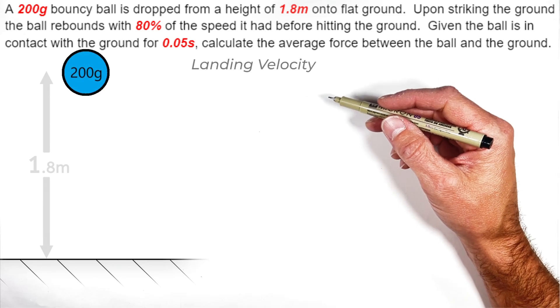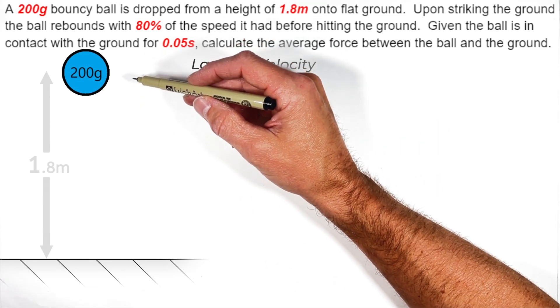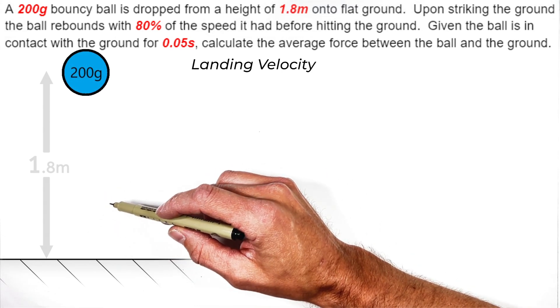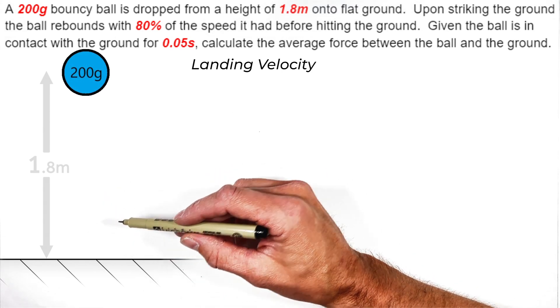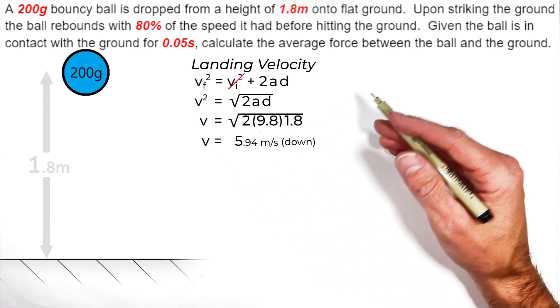So starting with the velocity of the ball when it strikes the ground, this ball is just in free fall from a height of 1.8 meters. We're trying to solve for how fast it's going to be going when it hits the ground. Now, whether you choose to solve this part of the problem using energy or kinematics, it really doesn't matter.